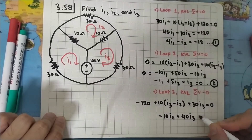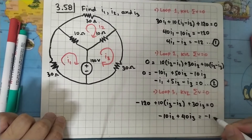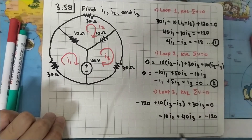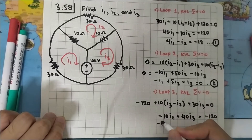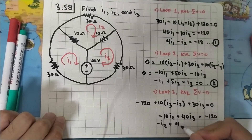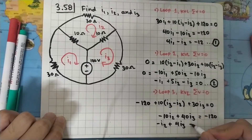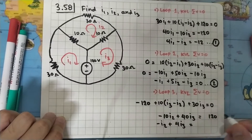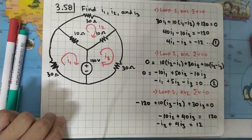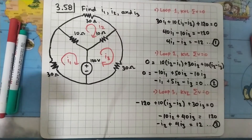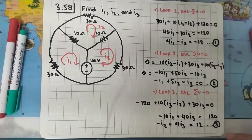This gives us: minus 10i2 plus 40i3 equals zero, or dividing both sides by 10: minus i2 plus 4i3 equals 12. Let's save this as equation number three. Now we have our three-equation system and can clean the board.